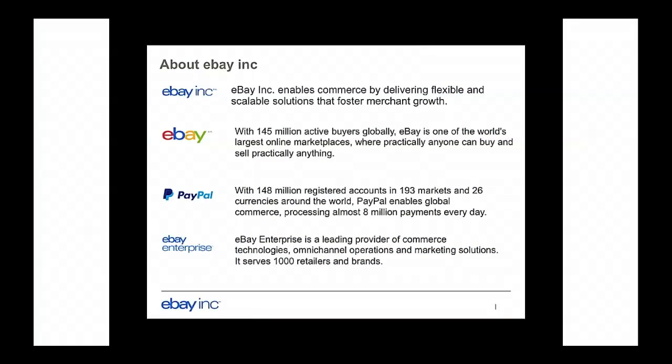eBay Inc. is a large corporation with a few businesses. The biggest ones are eBay Marketplaces, PayPal, and eBay Enterprise, formerly known as GSI. But there are a lot more names: Magento, StubHub, Ware, Milo. All of them need infrastructure, and all of them need and use our cloud.